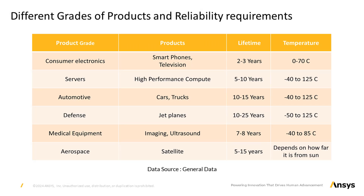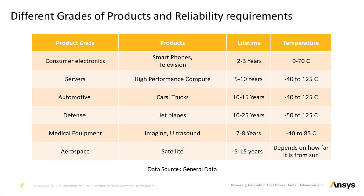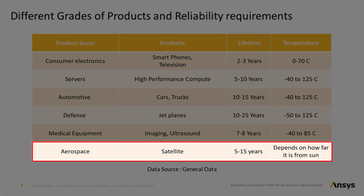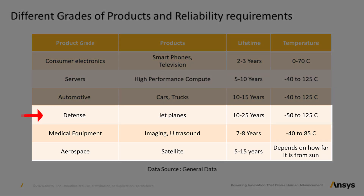For example, automotive chips need to withstand higher temperatures compared to mobile chips. Chips in aerospace applications have different requirements depending upon their proximity to the atmosphere. Certain product grades have a higher impact on human life, making it crucial to ensure their reliability. These include defense, healthcare, and aerospace.